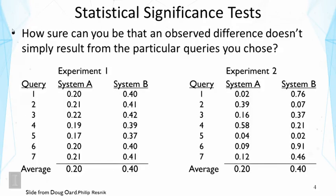We're going to talk about a couple of issues here. One is the statistical significance test, and this is also the reason why we have to use a lot of queries. The question here is: how sure can you be that an observed difference doesn't simply result from the particular queries you chose? Here are some sample results of average precision for System A and System B in two different experiments.